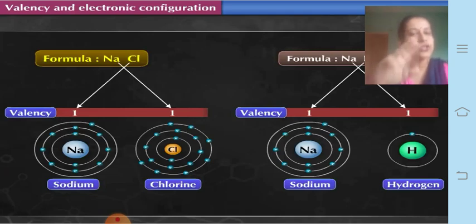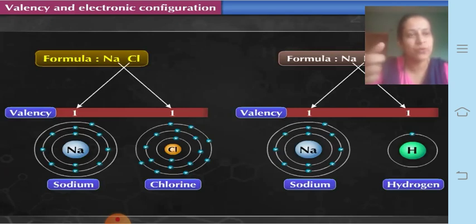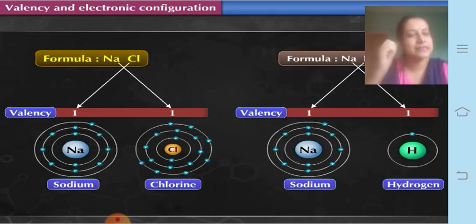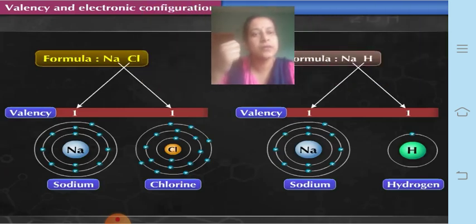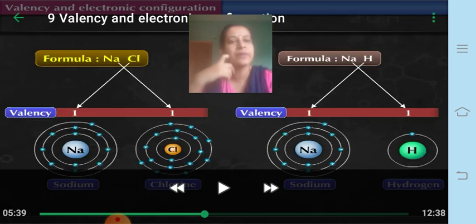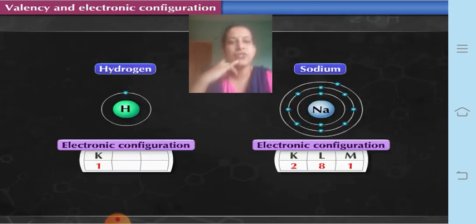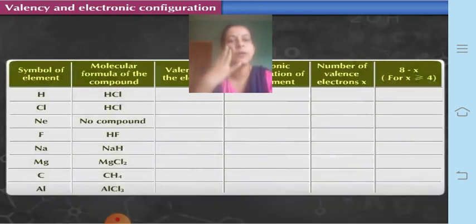You will understand how the valency of some elements depends on the number of electrons they have, whereas for other elements it depends on how many electrons are required to complete the octet or duplet. Depending on these two things, valency is decided. The valence shell decides the valency of different elements. Both hydrogen and sodium have valency 1, meaning the number of electrons in the outermost shell determines the valency.